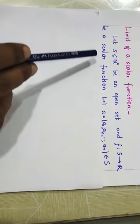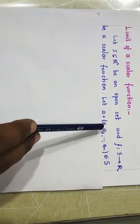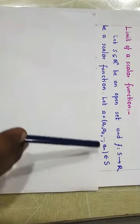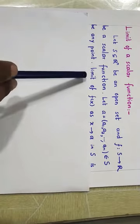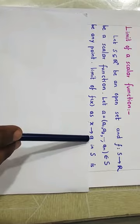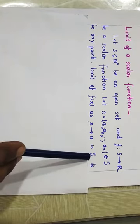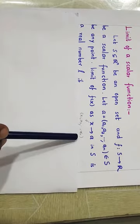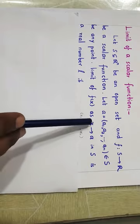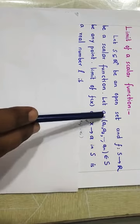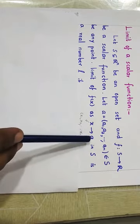F is any scalar function. And A is any constant vector in S — A equal to (A1, A2, A3, ..., An). Then the limit of F as X is tending to A in S is defined as follows. X must be an n-tuple (X1, X2, X3, ..., Xn), and this n-tuple, this variable vector, is approaching to the constant vector A in S.